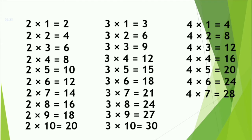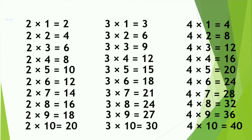Four sevens are twenty-eight. Four eights are thirty-two. Four nines are thirty-six. Four tens are forty.